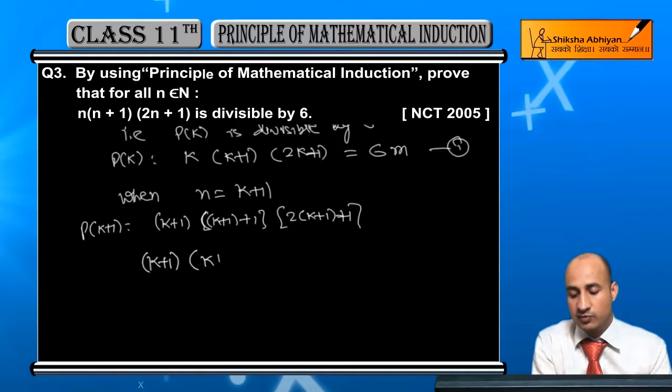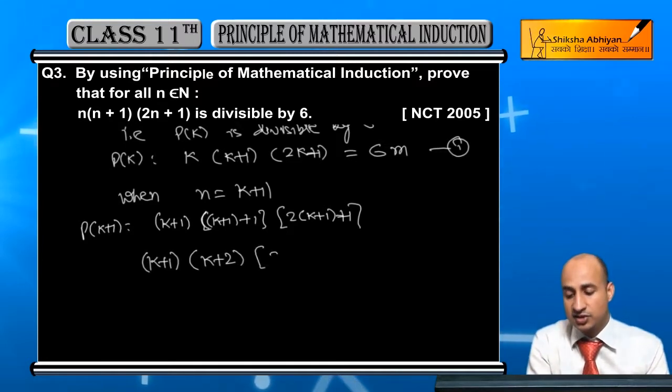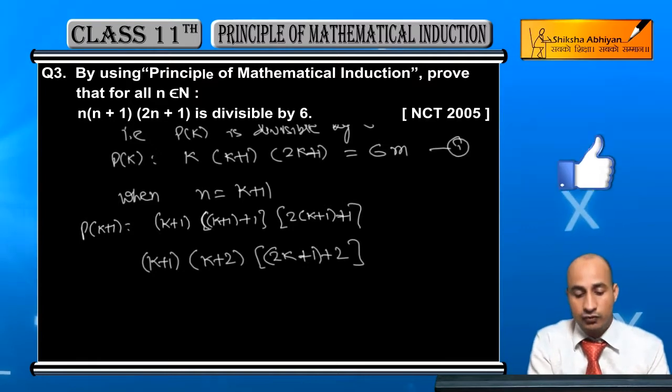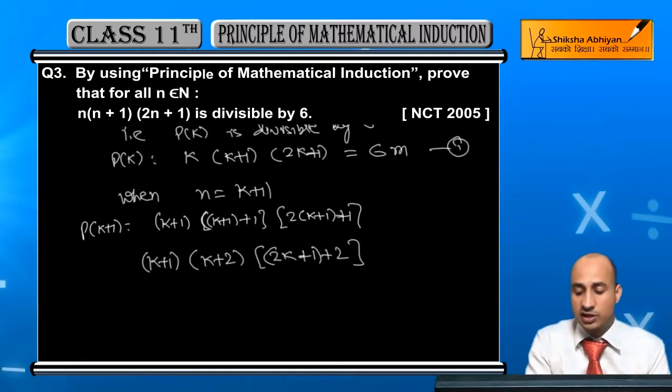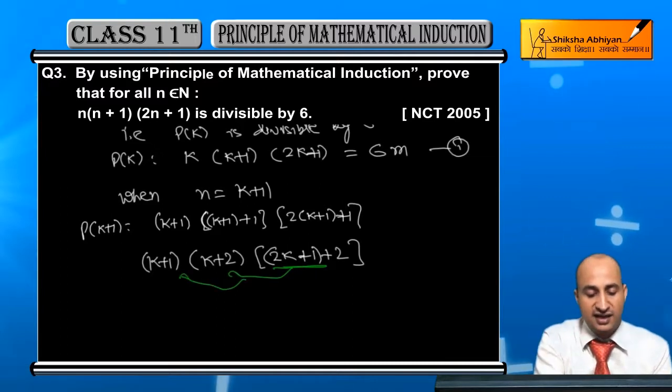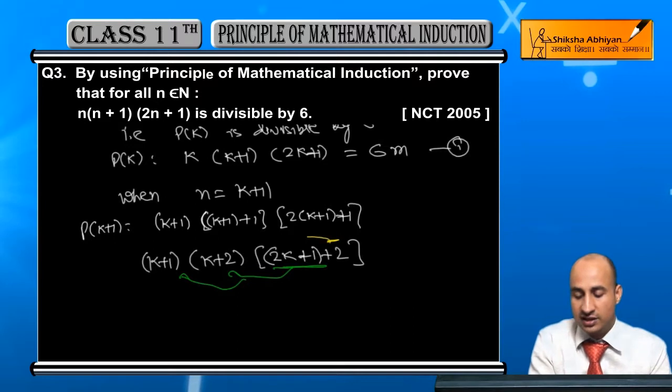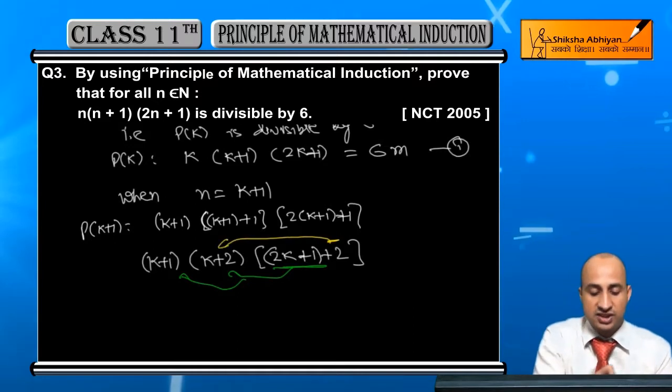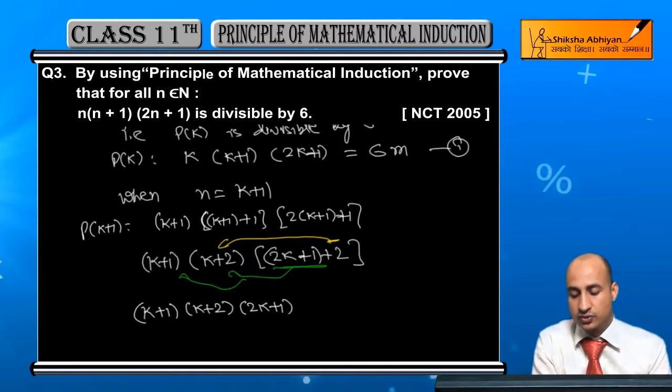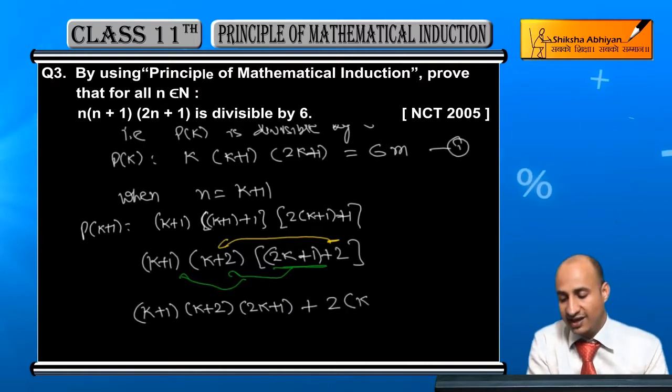And this will be next is 2K plus 1 into plus 1. So, P(N) equals K plus 1 into K plus 2 into K plus 2. And next, what can I do? 2K plus 2 plus 1. Then, plus 1 here, plus 2 here. So this equals K plus 1 into K plus 2 into K. So, P(N) equals K plus 2 into K plus 2 into K plus 1.